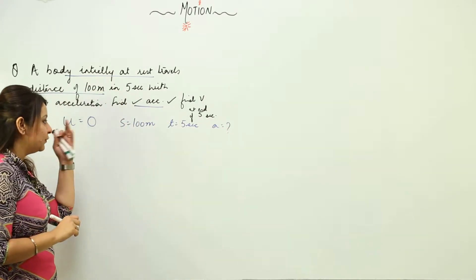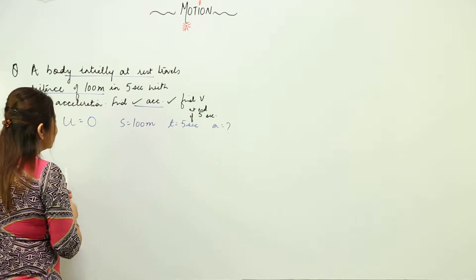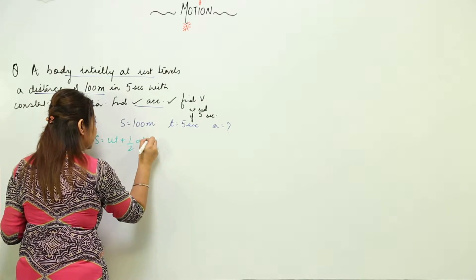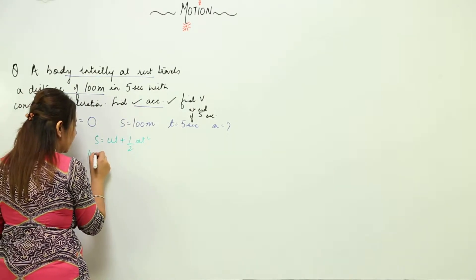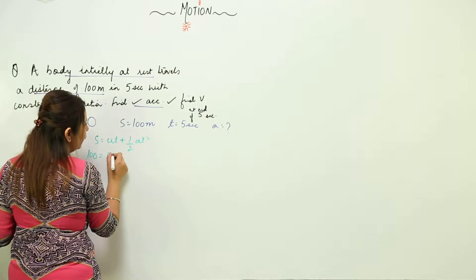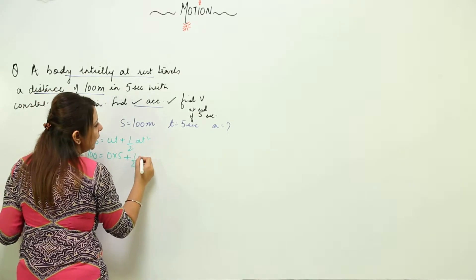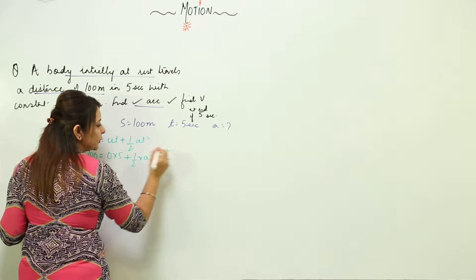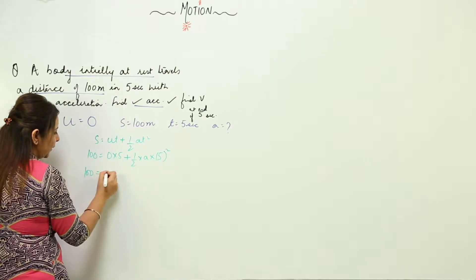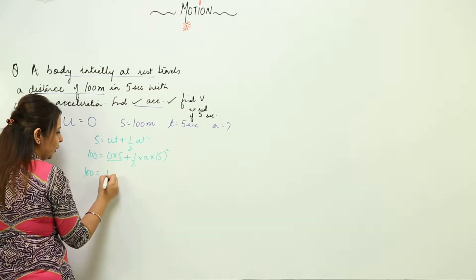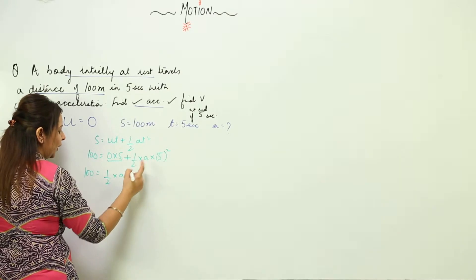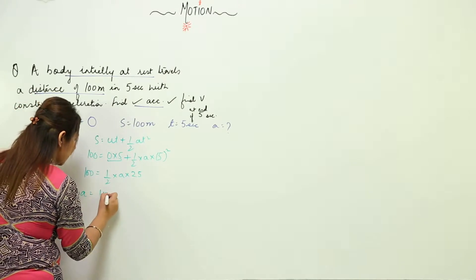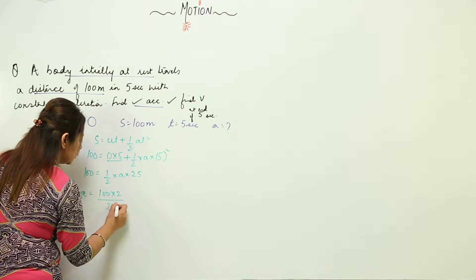We look for the equation which contains all four variables. It is s = ut + ½at². Putting in the values: s is 100, u is 0, time is 5, plus half, a we need to find, time is 5, and square of 5 is 25. Simplifying, anything multiplied by 0 is 0, so we get ½ × a × 25, or we can say a = 100 × 2 upon 25.